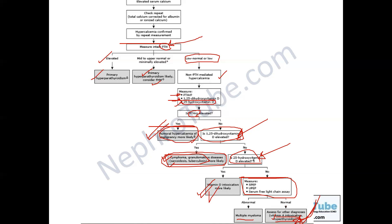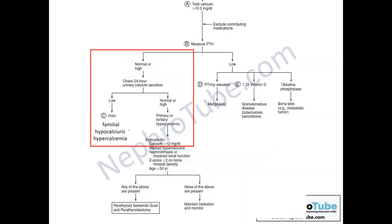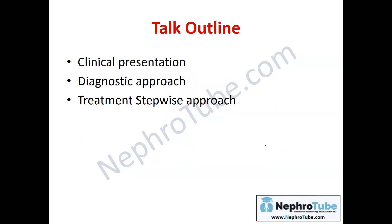Regarding differentiation between primary hyperparathyroidism and familial hypocalciuric hypercalcemia — which is more common in pediatric nephrology — you check the 24-hour urinary calcium. If it is low, it is familial hypocalciuric hypercalcemia. If it is normal or high, you are dealing with primary or tertiary hyperparathyroidism.